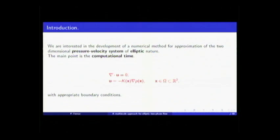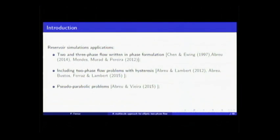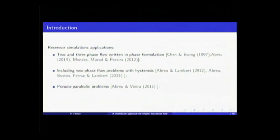We are interested in a numerical method for the approximation of the pressure-velocity system in its mixed form. It's a simple model with appropriate conditions and the main point we want to see is the computational time. This pressure-velocity problem appears in many applications, but we are interested in reservoir simulation applications, where it appears in two and three phase flow problems in the phase formulations. We can also add hysteresis in these formulations, and we also see pressure-velocity problems in pseudo-parabolic problems, which is future work.